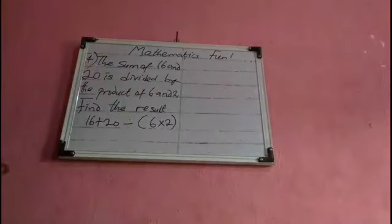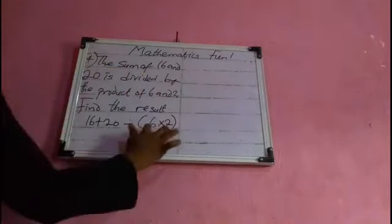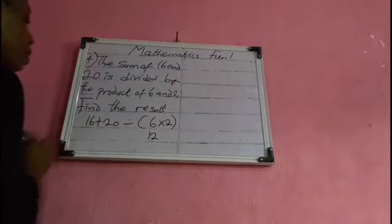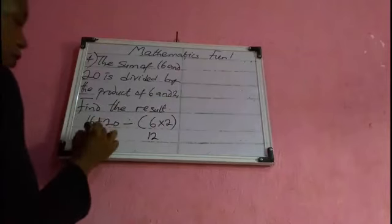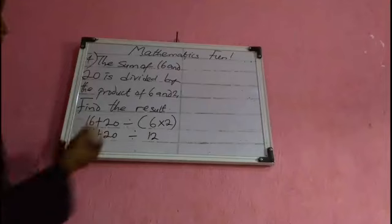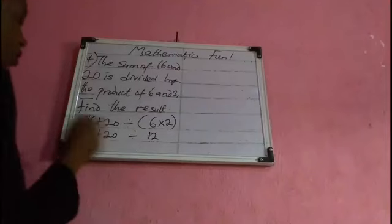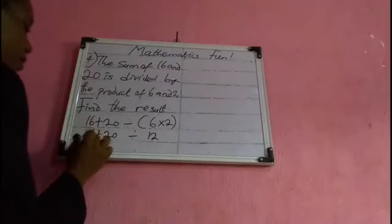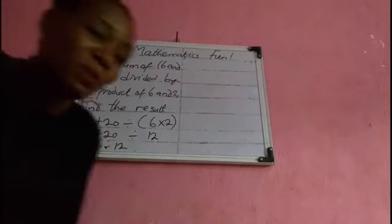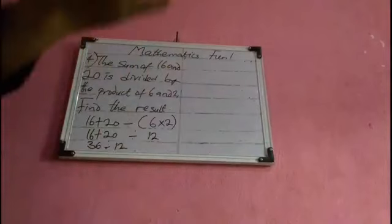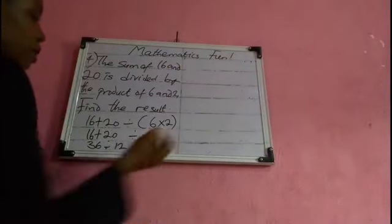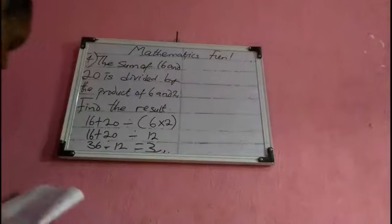So 16 plus 20 equals 36, divided by 12. Thirty-six divided by 12 gives us 3. So our answer is 3.